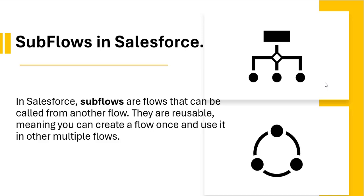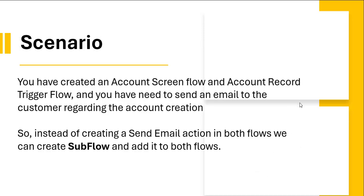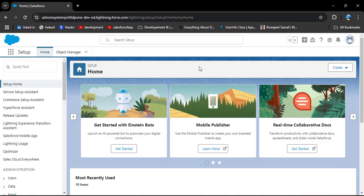To better understand, let's take a scenario. You have created an account screen flow and an account record trigger flow — both for account creation — and you need to send an email to the customer regarding the account creation. So instead of creating the send email action on both flows, we will create a sub-flow and add it to both the account screen flow and the record trigger flow.